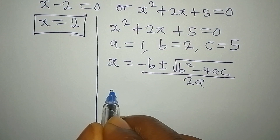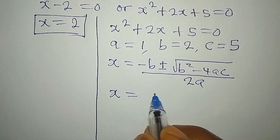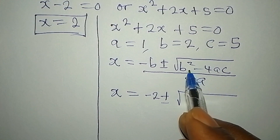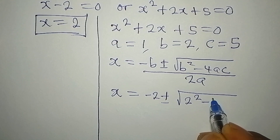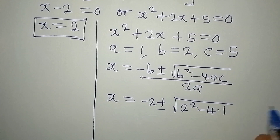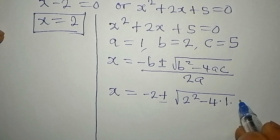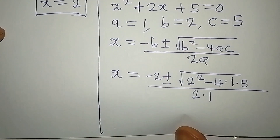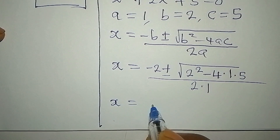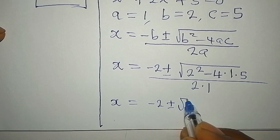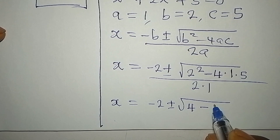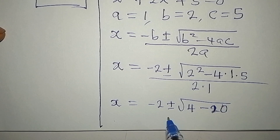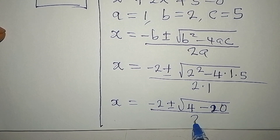Substituting: x equals negative 2 plus or minus square root of 2 squared minus 4 times 1 times 5, all over 2 times 1. Continuing: x equals negative 2 plus or minus square root of 4 minus 20.